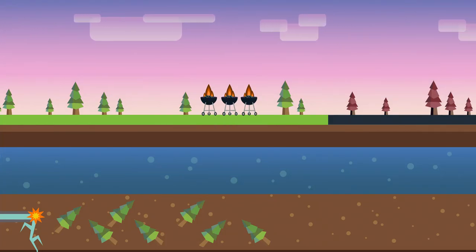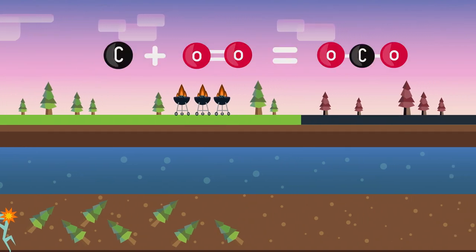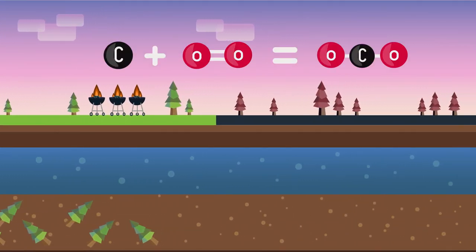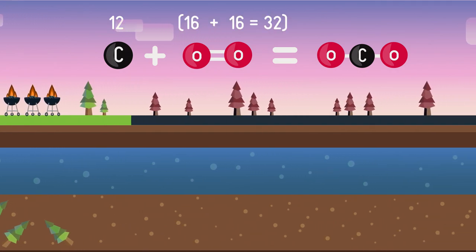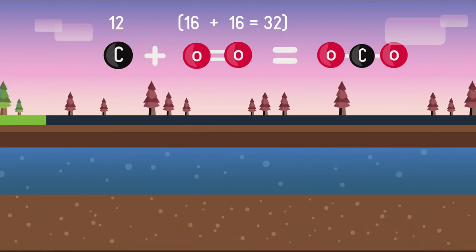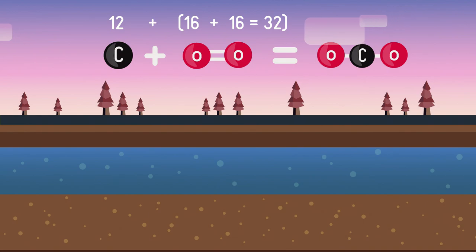Well, coal is made mainly of carbon and when it burns it reacts with oxygen like this. Carbon atoms have an atomic mass of 12 and oxygen 16. So 32 tons of oxygen react with 12 tons of carbon to produce 44 tons of carbon dioxide. If you said there would be much more than 12 tons of carbon dioxide, you were right.